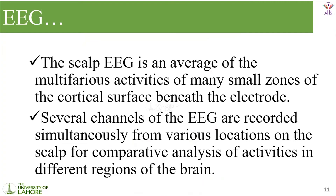The scalp EEG is an average of the multifarious activities of many small zones of the cortical surface beneath the electrode. Whenever we place electrodes on the scalp of a person, it marks some area and detects which part provides electrical signals. For example, if I am moving my right hand, the part of my brain which controls the right hand will provide some electrical stimulus, and from that specific part I will get some signals. It is not like the whole brain gives signals — only the parts using energy for the current movement will give stimulus.